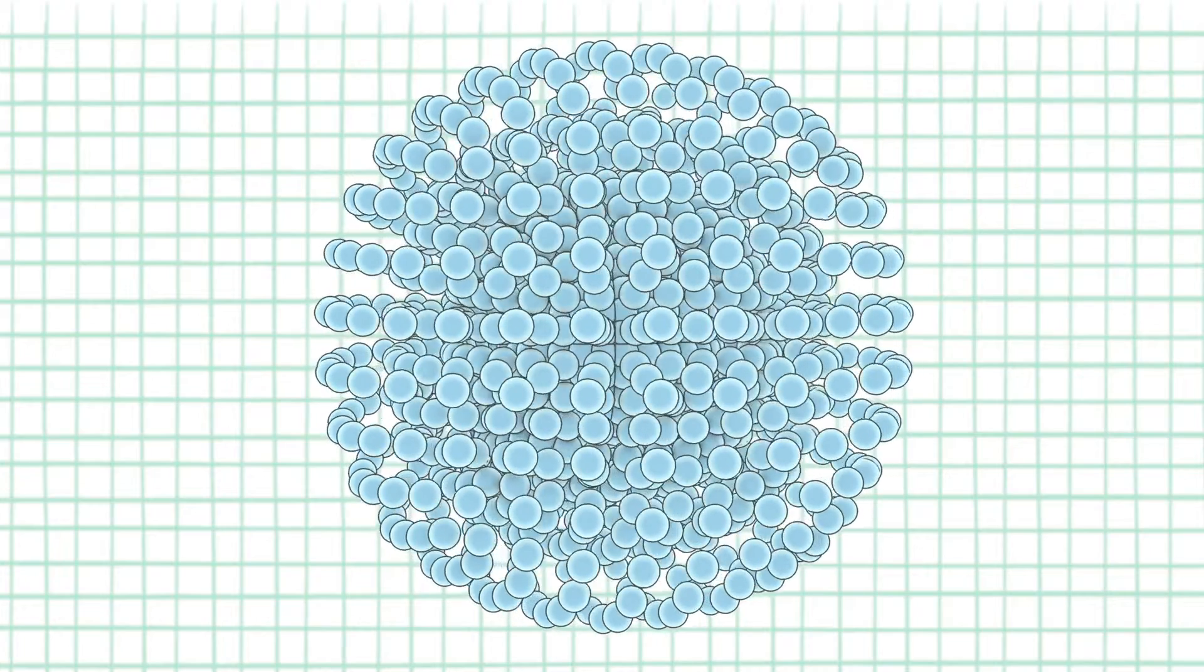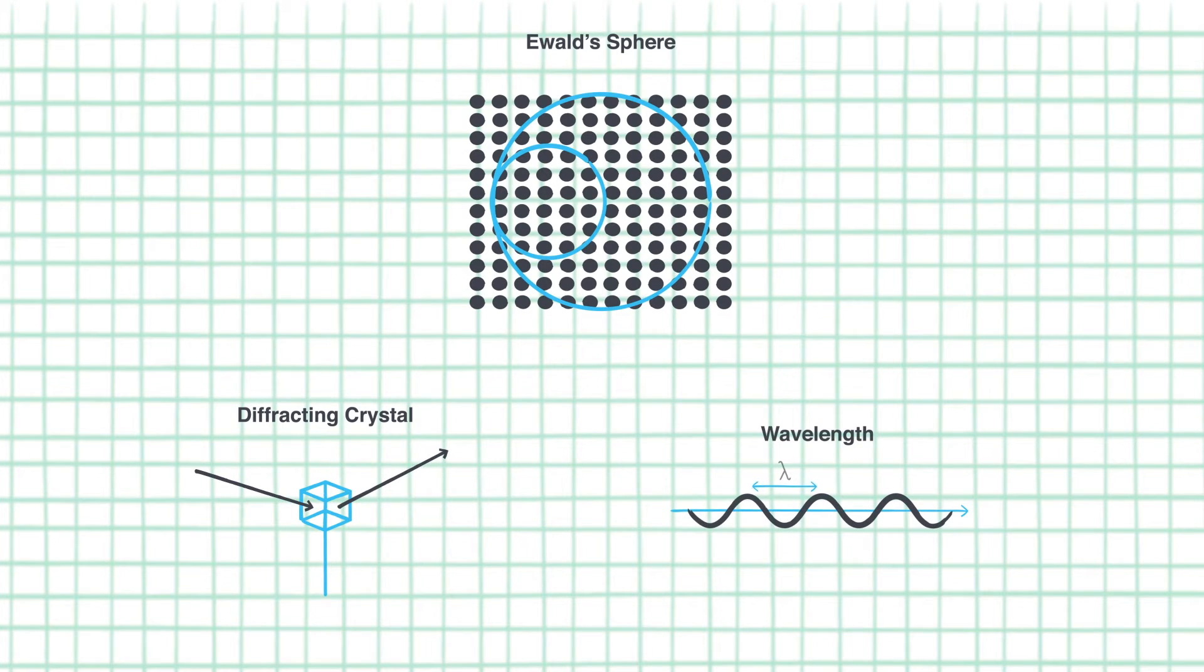This is the Ewald sphere and we are going to discuss how it can be constructed, how to know our crystal is in a diffraction orientation and what effect the wavelength has on our diffraction experiment.